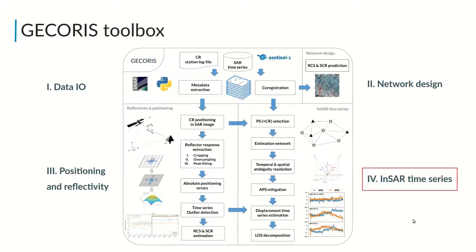Finally, the last module of GECORIS is used to estimate the InSAR displacement time series of a corner reflector network, also integrating the surrounding high-quality persistent scatterers.